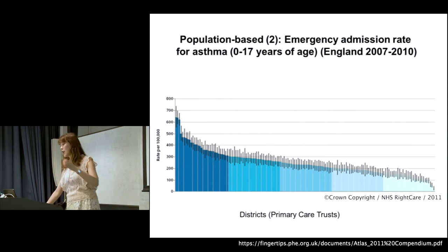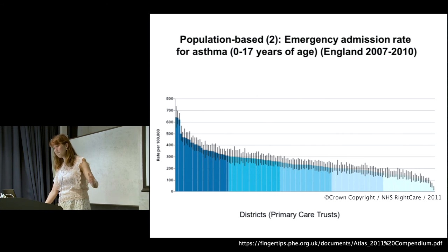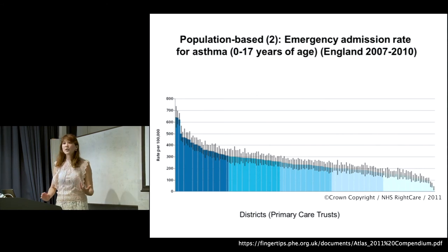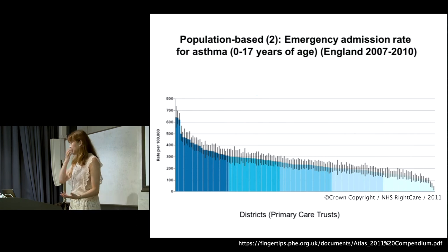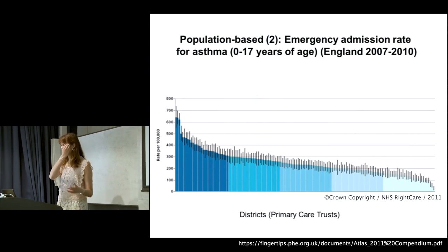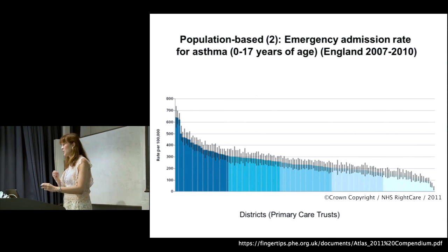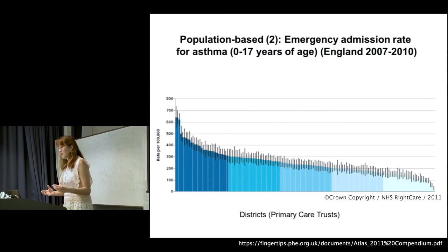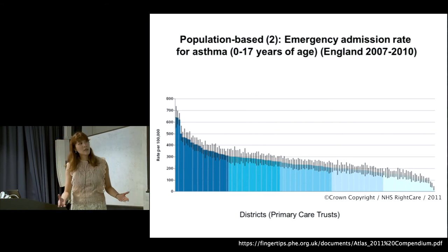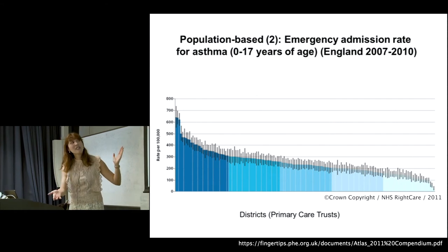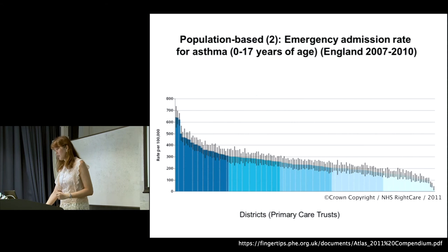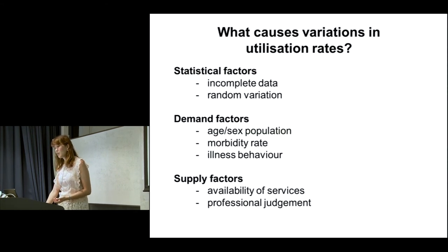For lower-income countries, population-based use measures are also revealing. Looking at immunization coverage globally, there are huge variations between countries, including some with no data. Looking at England specifically, emergency admission rates for asthma show large within-country variation. We can assume some prevalence difference exists, but should population-based admission rates for asthma really vary that much within one country? It raises important questions about what's driving that variation.